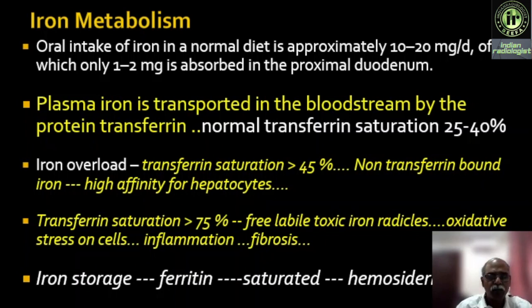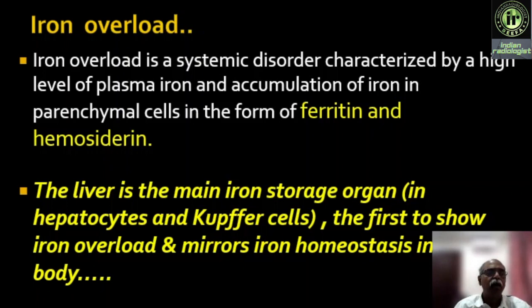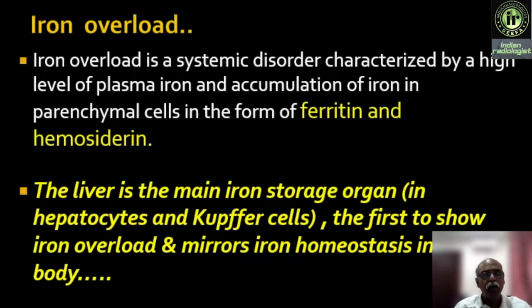Iron is stored predominantly as ferritin, and if ferritin gets saturated — ferritin is a protein — when it gets saturated it is stored as hemosiderin, which is a separate molecule that forms clusters wherever it is stored. Iron overload status is a systemic disorder characterized by high levels of plasma iron and accumulation of iron in parenchymal cells in the form of ferritin and hemosiderin. In the hepatocytes, iron is stored in the form of ferritin, and if ferritin gets saturated, it is stored in the form of hemosiderin.